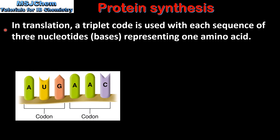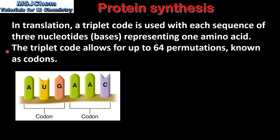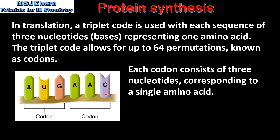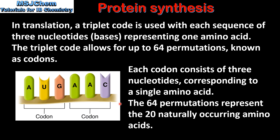In translation, a triplet code is used, with each sequence of three nucleotides or bases representing one amino acid. The triplet code allows for up to 64 permutations, which are known as codons. As we can see from this diagram, each codon consists of three nucleotides corresponding to a single amino acid. The 64 permutations represent the 20 naturally occurring amino acids.